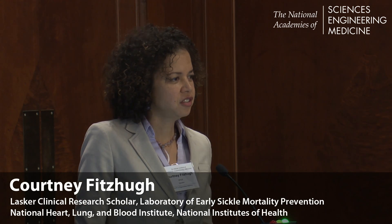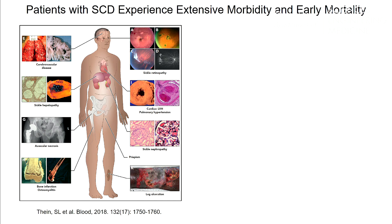Sickle cell disease is caused by a point mutation, which leads to polymerization of hemoglobin upon deoxygenation and the transformation of the red blood cells from a flexible biconcave disc to a rigid sickle-shaped cell, which occludes the microvasculature and leads to many of the different complications we see with sickle cell disease.